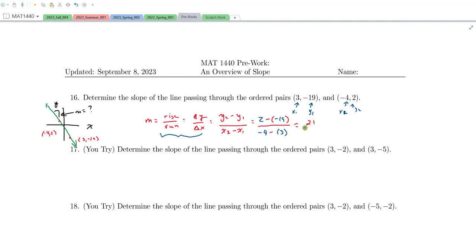Anyway, our numerator simplifies to be 21, and our denominator simplifies to be negative 7. And in this case, if we do the division, we end up with a slope of negative 3. And just as a quick check, we expected the slope to come out to be negative. We just found the slope of this line connecting these points to be negative 3.